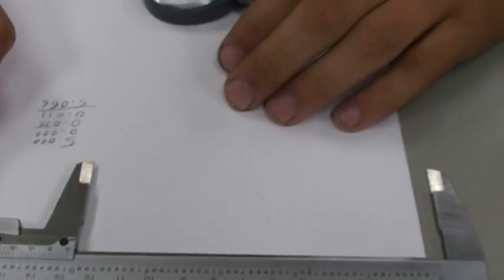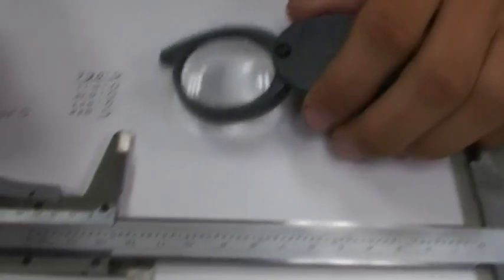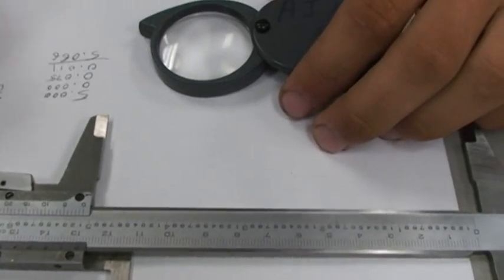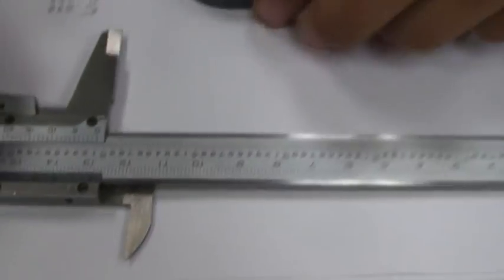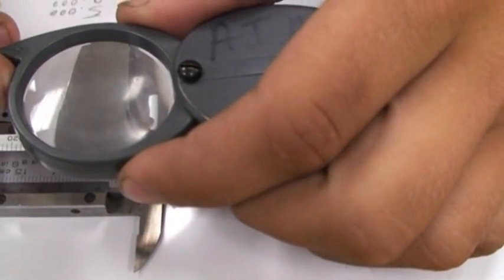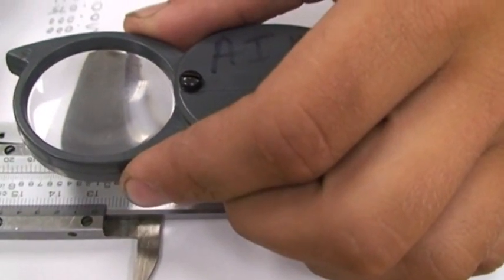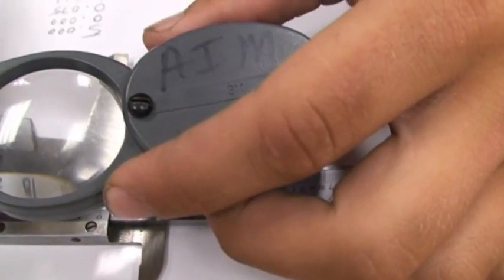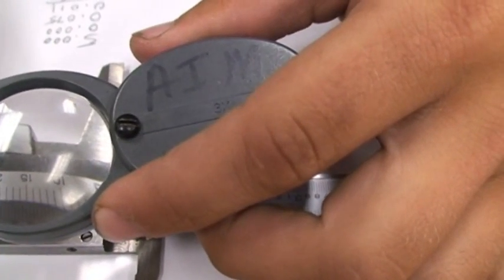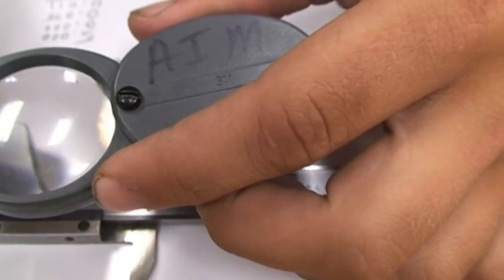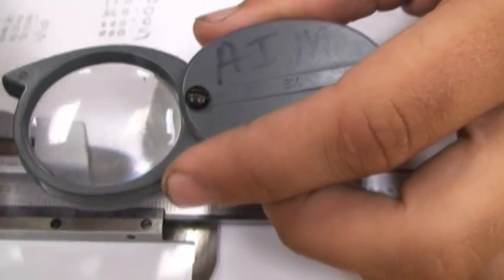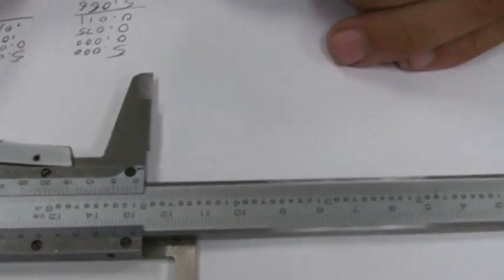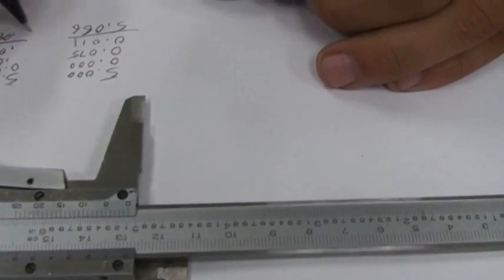So you'd have 5 inches, then 0.00 tenths, then 0.075 hundredths. And then look for your thousandth reading. And I'm going to go with 10 there, so you'd have 5.085.